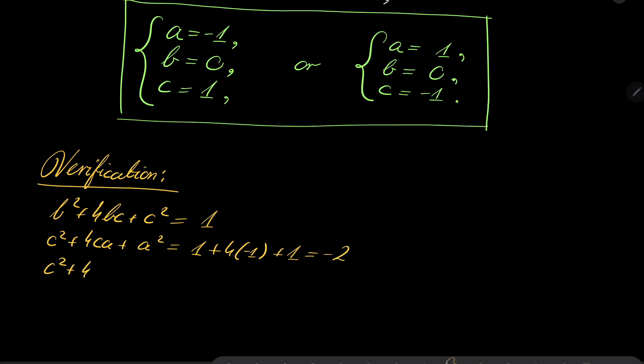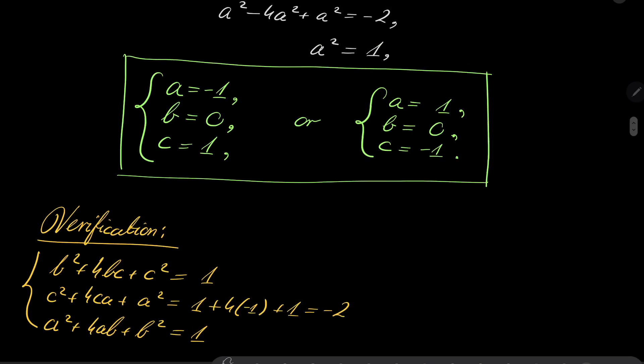c² + 4, or rather, a² + 4ab + b². Well, b is 0, a² is 1. So it all checks out. So we have exactly two triples of solutions, real solutions. And that is it.